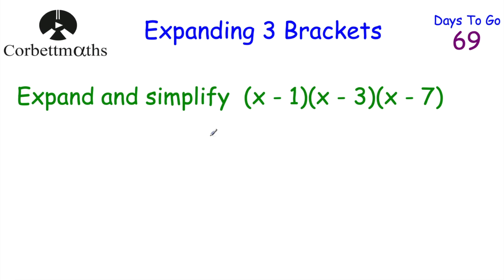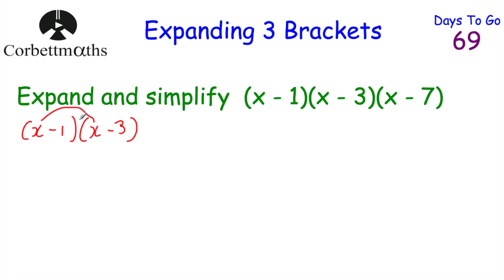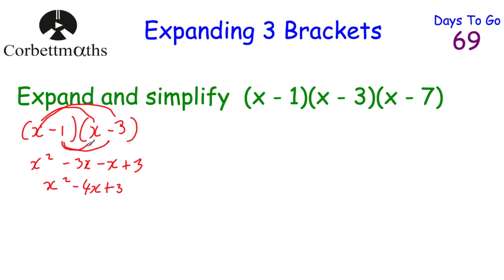Now here's one for you to try: expand and simplify (x − 1)(x − 3)(x − 7). I'd expand the first two brackets to begin with. So (x − 1)(x − 3): x times x is x squared; x times minus 3 is minus 3x; minus 1 times x is minus x; minus 1 times minus 3 — a negative times a negative is positive — so plus 3. Collecting like terms: minus 3x minus x gives minus 4x. So (x − 1)(x − 3) = x² − 4x + 3.